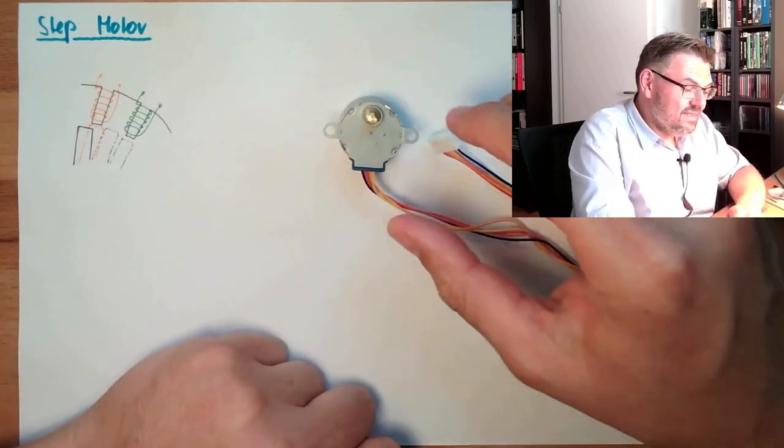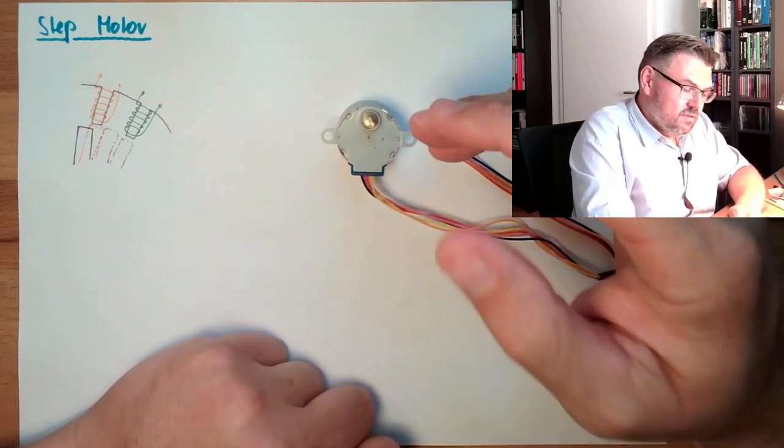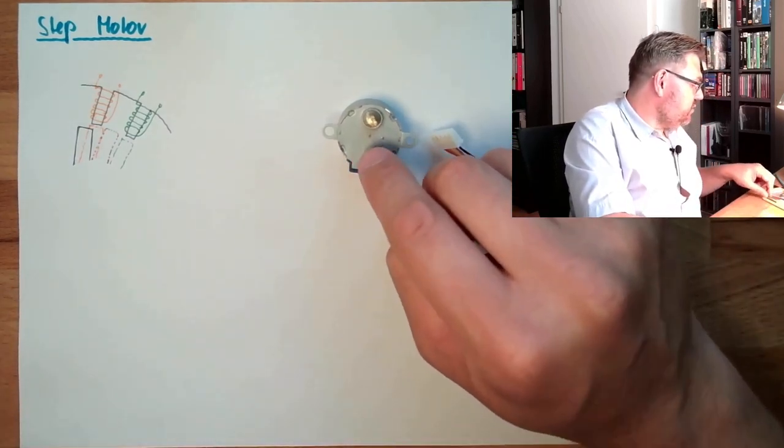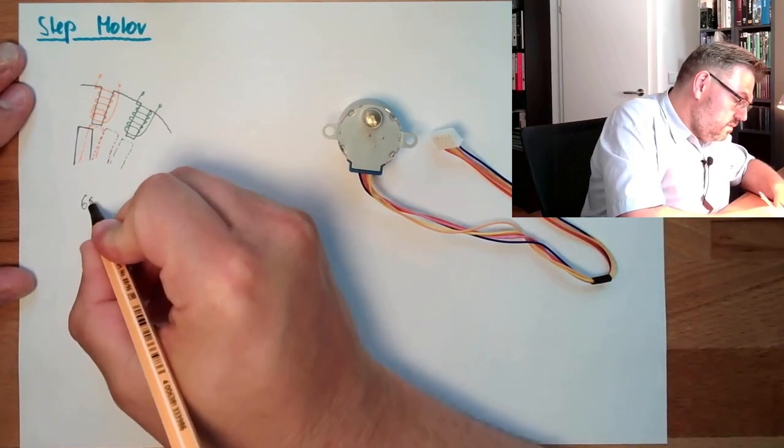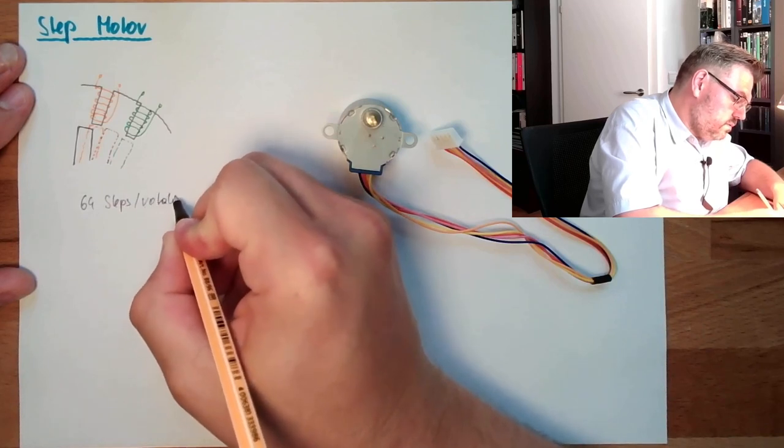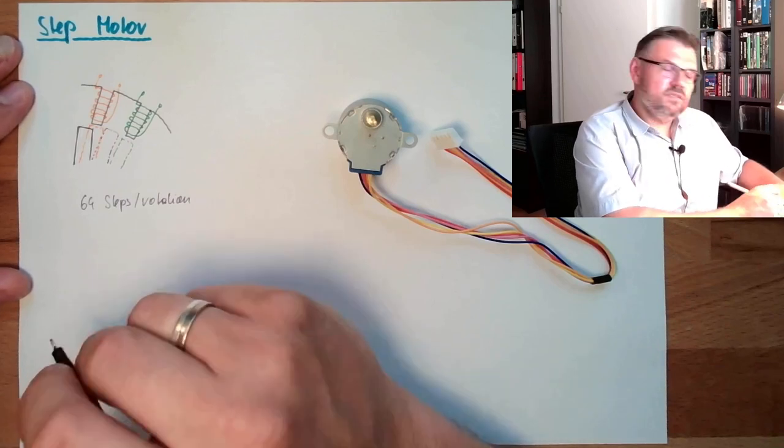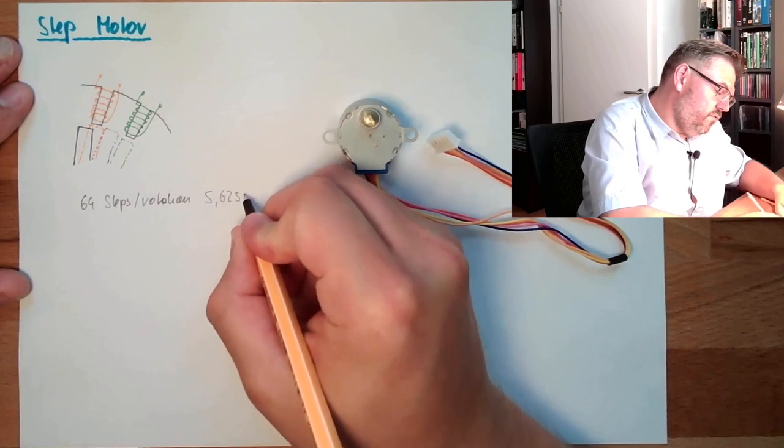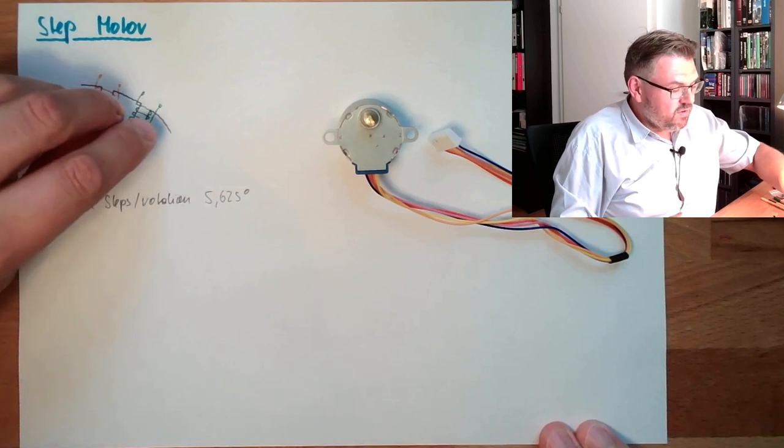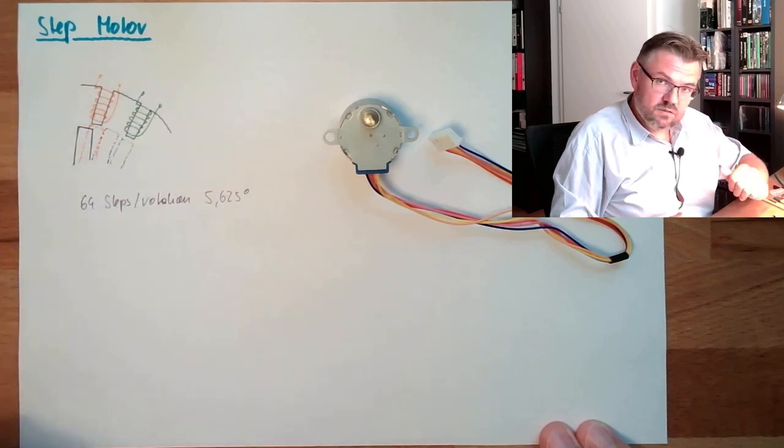Usual sizes, parameters of a stepper motor are how many steps per rotation. The internal part here, this one, has 64 steps per rotation. These are 5.6 to 5 degrees. So every time I change something on the coil, the internal part will move 5.6 degrees in steps.